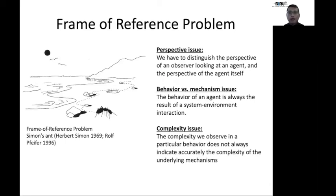To tackle these fundamental challenges, there are many theoretical questions to be considered. The first of this kind is the so-called frame of reference problem. This refers to the perspective issue where we need to be clear about the perspectives of observers versus that of the agent itself. This problem was originally proposed by Herbert Simon, known as Simon's ant. This ant in the picture in the slide is following a very complex trajectory on the beach, but the complexity is not within the ant mechanism itself. The ant's navigation mechanism is rather simple. Instead, the complexity exists in the interaction with the environment. Our robot patient will be in a very similar circumstance.